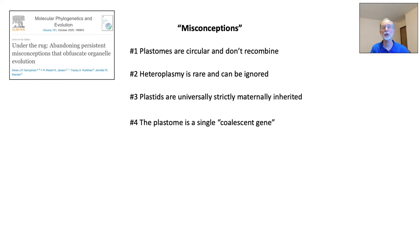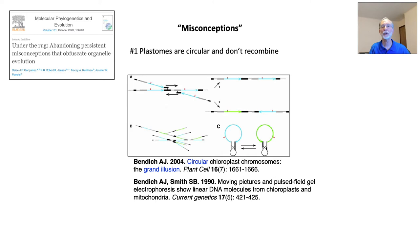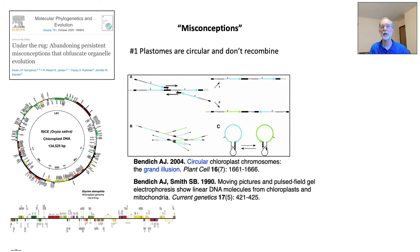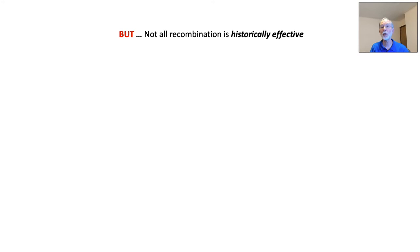I disagree with the authors on that conclusion, so let's explore these issues point by point. Plastomes have indeed been represented as circles, and this convention continues. But there has been disagreement about this for over 30 years, mainly from Arnold Benditch, who calls circular chloroplast genomes the grand delusion. For phylogeny reconstruction, it does not matter how the genes of a plastome are represented. But what does matter is recombination. Benditch's models require considerable intermolecular recombination, but recombination, albeit intramolecular, is also part of the circular model going back to the 1970s and 1980s. So the ability of the plastome to recombine has never been disputed.